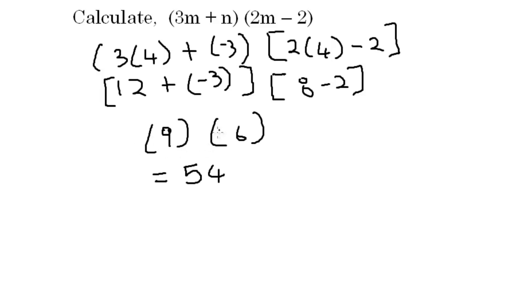So what we did? The first thing we did was substitute 4 for m and minus 3 for n into the equation and then we went on and simplified it. And the answer is 54.